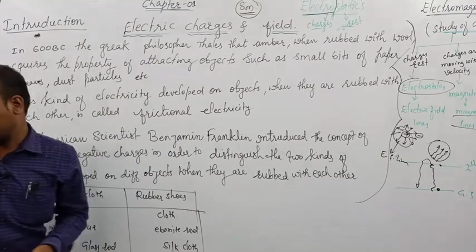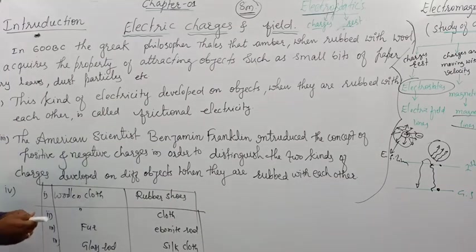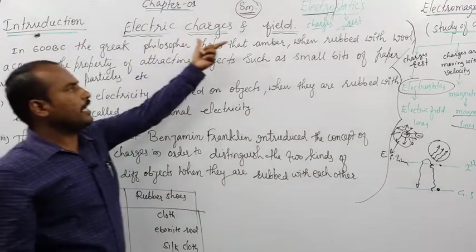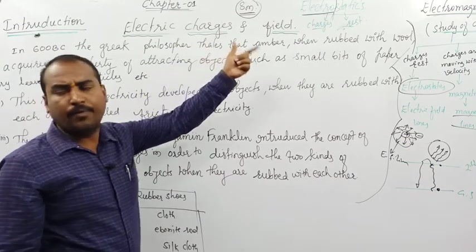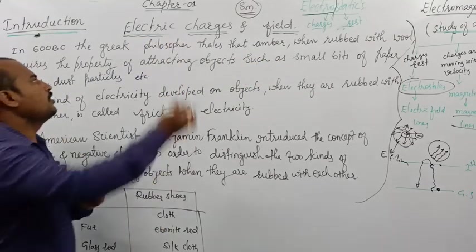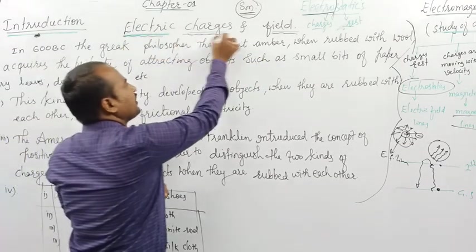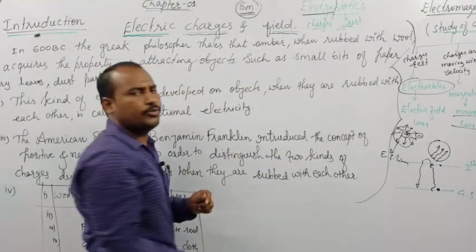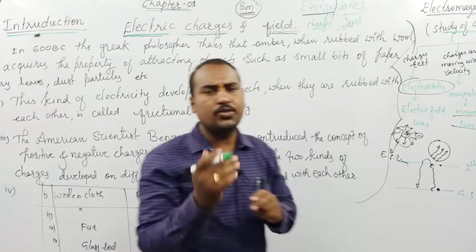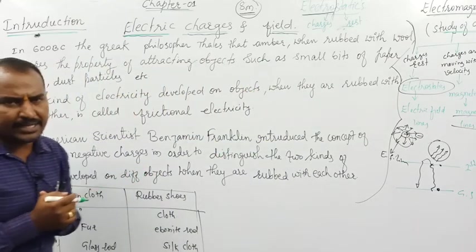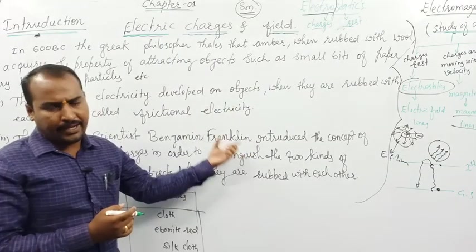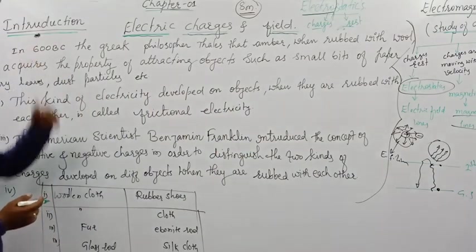Introduction for this chapter. Electric charges and field — the region around positive and negative charges is called electric field, and we will study that in detail here.